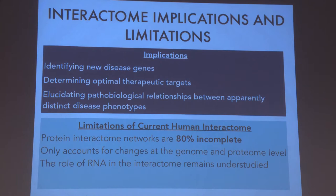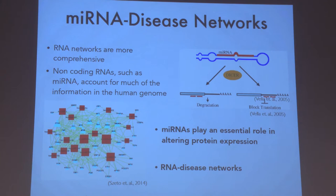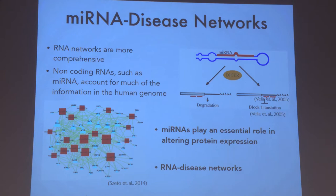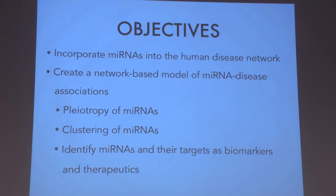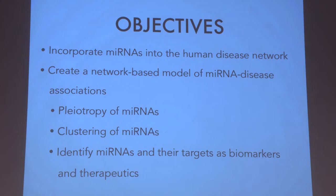So why are RNA-to-disease networks important? Unlike the incomplete protein interactome, RNA networks are more comprehensive, owing to the availability of RNA sequence information. Non-coding RNAs in particular, such as micro-RNAs, account for much of the information encoded in the human genome. Micro-RNAs are essential in protein expression through post-transcriptional regulation and RNA silencing. Given the importance of micro-RNAs in disease, the objective of this research was to incorporate a micro-RNA disease network into the human interactome, in order to examine clustering of micro-RNAs in terms of diseases, with the goal of identifying putative micro-RNAs as biomarkers and therapeutics.